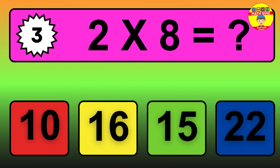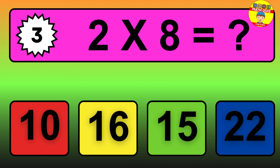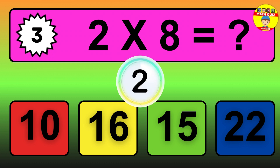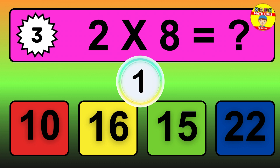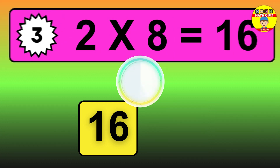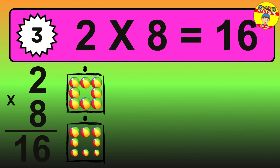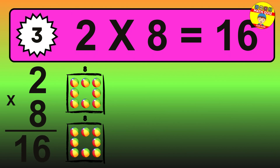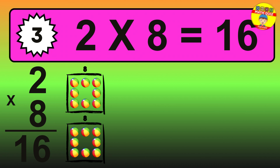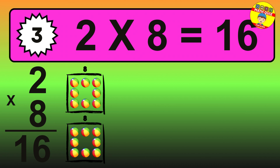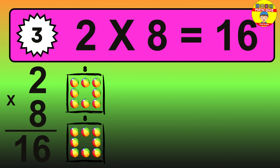Question 3. 2 times 8 equals what? The answer is 2 times 8 is 16. To calculate, we have 2 groups with 8 balls each one. So, how many balls do we have? 16 balls.